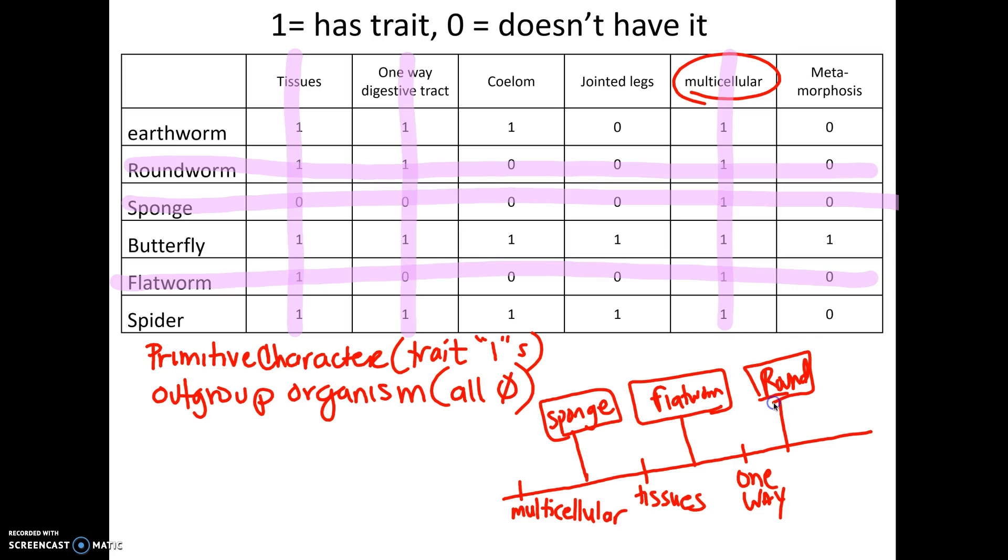Probably going to run out of space here. Now we're looking for a trait, again, that everybody has. And I see the next one is called a coelom. That's how that's pronounced. So coelom. And again, I did not plan this well, so I'm going to run out of space. Our next trait, sorry, we're looking for an organism now, would be the earthworm. The earthworm has all zeros. So now we're going to put earthworm. I'll just put earth.